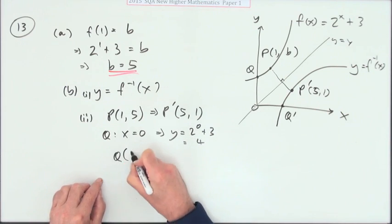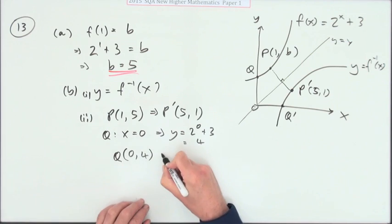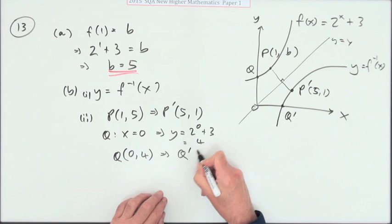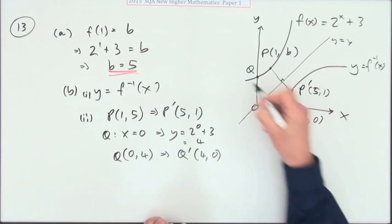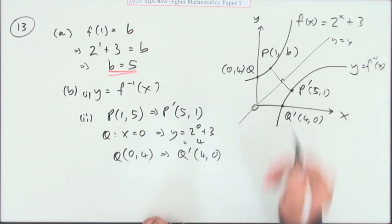So q is the point 0, 4, that means that its image, calling it q dash, would be 4, 0. So that's 4 along 0, and that's 0, 4.